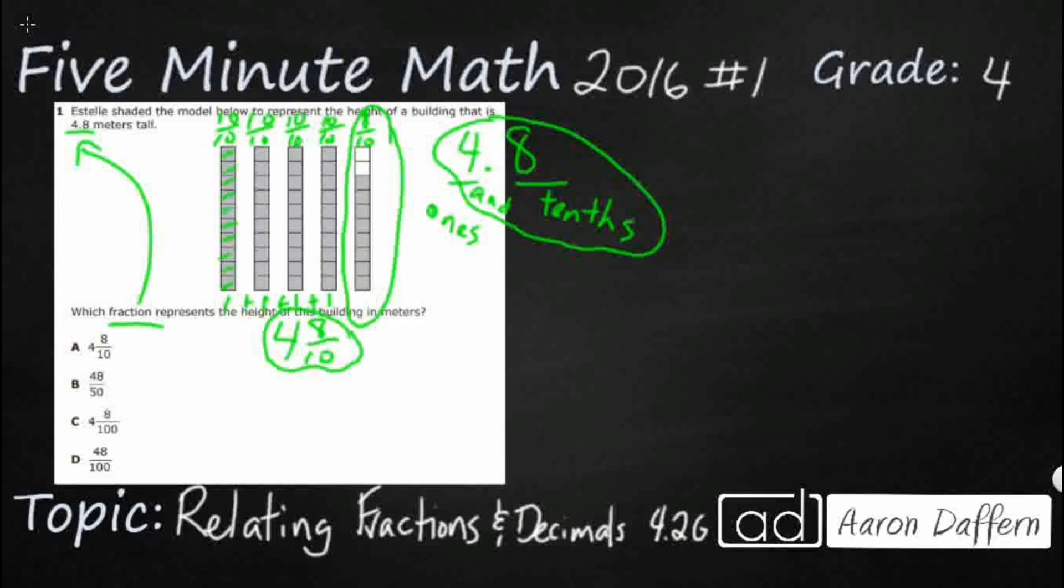That's what's so interesting, is you can say this right here, 4 and 8 tenths, and you can say the exact same thing, 4 and 8 tenths. Now, every fraction does not have an equal decimal that relates to it. It really works if you have a decimal or a fraction that has a denominator of 10 or 100 or 1,000. If it's a different denominator, it's going to look slightly different. But these two are exactly the same, 8 tenths, 8 tenths.